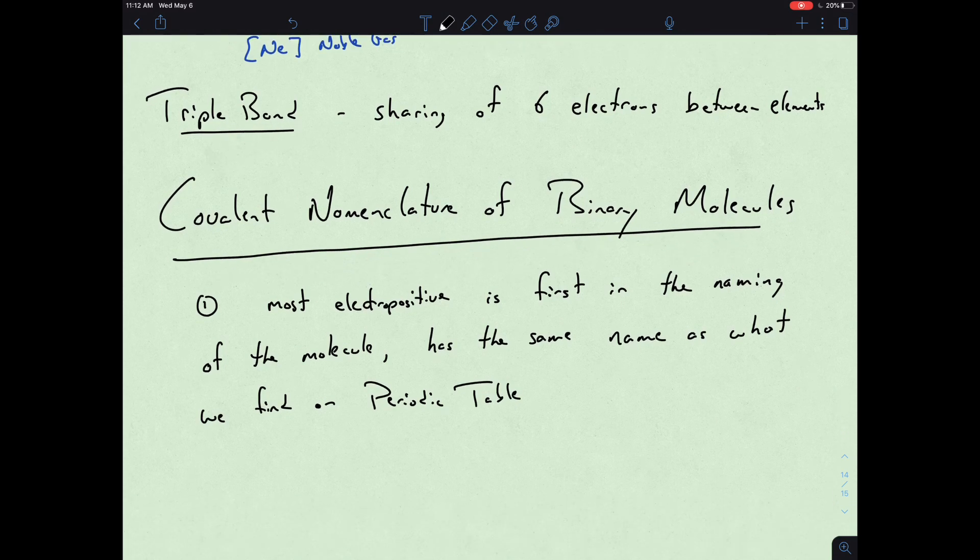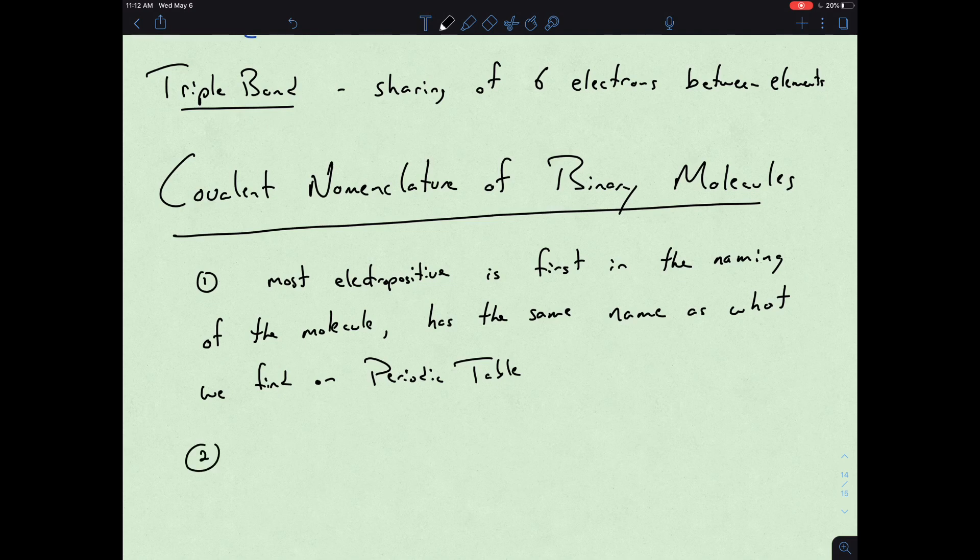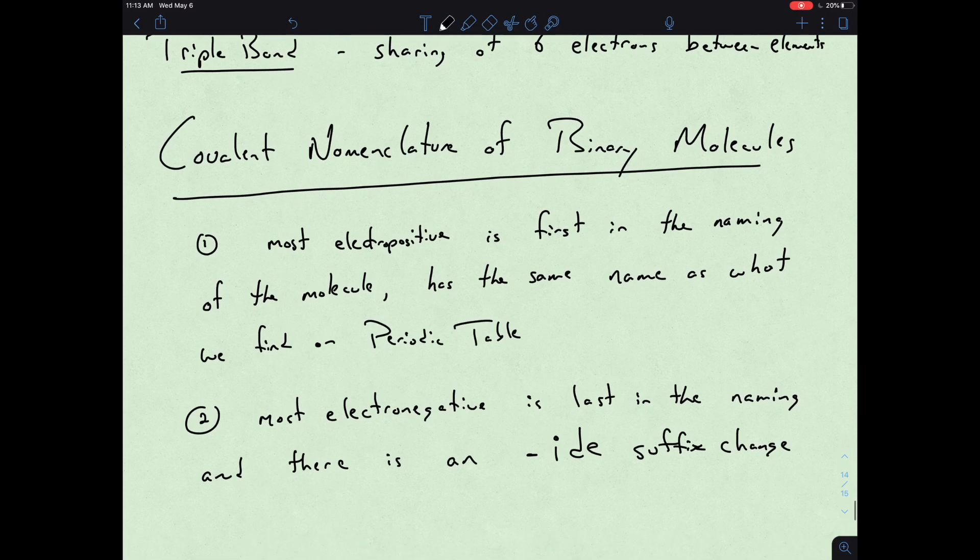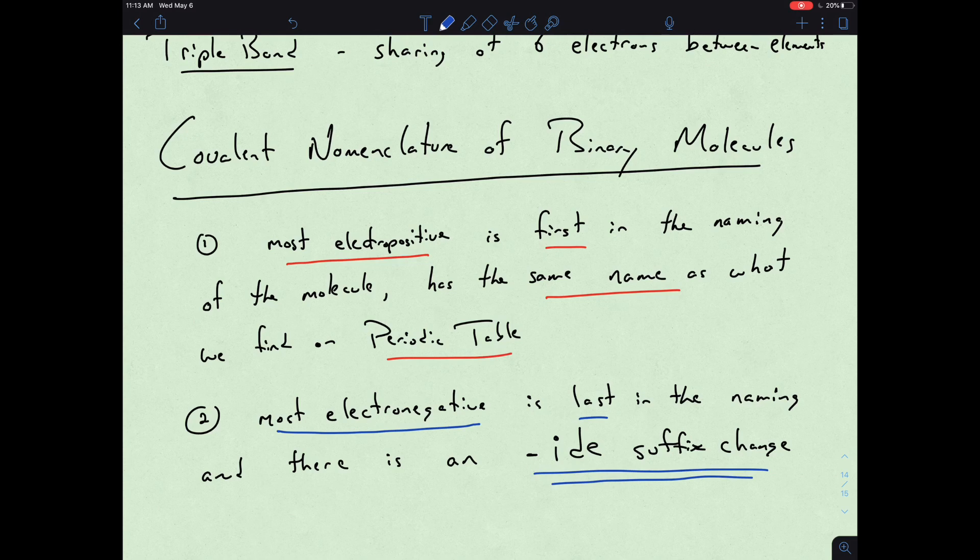With our second, the most electronegative, there's essentially last in the naming, and there's also an -ide suffix change as well. So the first rules are still very much the same. Most electropositive is first and same name as what we have on the periodic table, while our most electronegative is last and we still have that -ide suffix change that we're looking at.